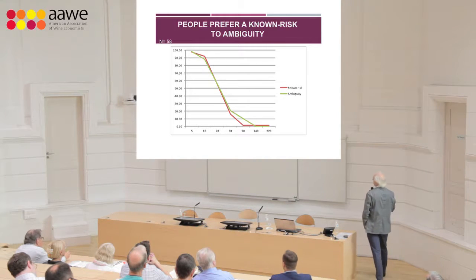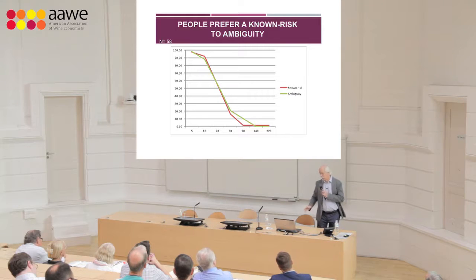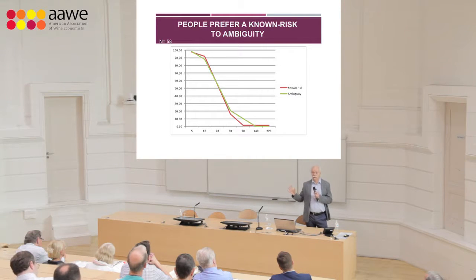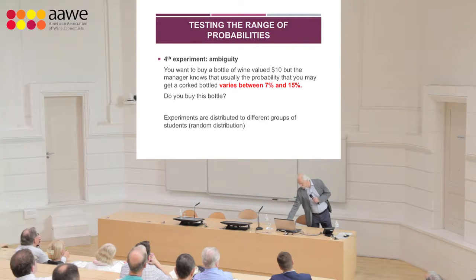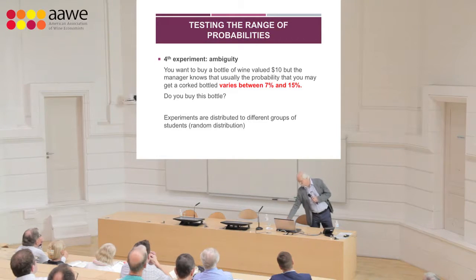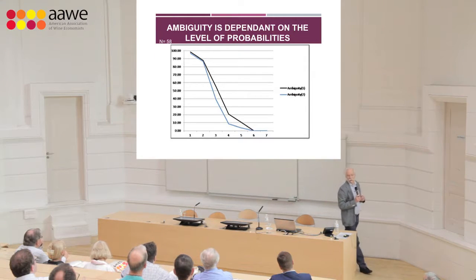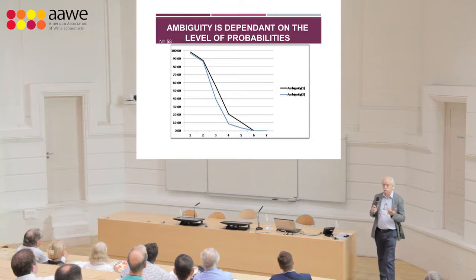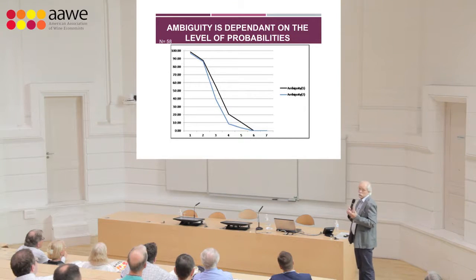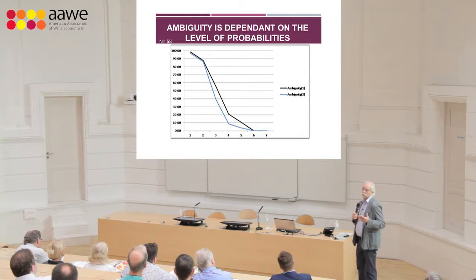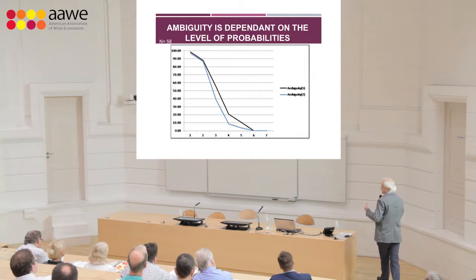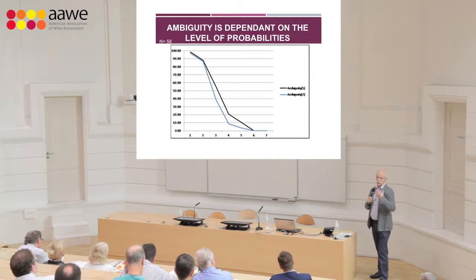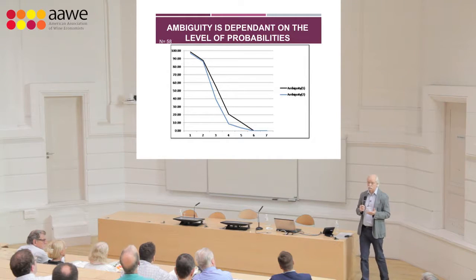It's not surprising that we're not getting any difference between the two curves in that case. So we changed the range of ambiguity given to the students. If we change the range from 7 to 15 percent — which is above their average perceived risk — the demand curve drops. Ambiguity 1 refers to the first situation (2–8%), and Ambiguity 2 is the new situation (7–15%). The demand curve drops because the ambiguity provided to respondents now exceeds their average perceived risk of getting a corked bottle.